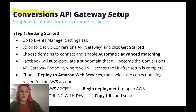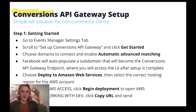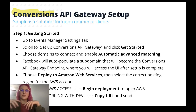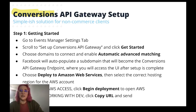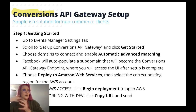You're going to choose the domains you want to connect and enable automatic advanced matching. Facebook will auto-populate a subdomain — it'll be some string of letters and numbers dot your domain dot com — and that's going to become the endpoint where you'll go in your URL bar to access the UI after setup is complete. I changed mine to 'conversions' so it was conversions.domain.com, which was very easy to remember rather than some random string of letters and numbers. Whatever works for you.